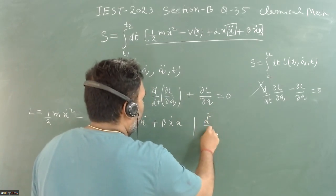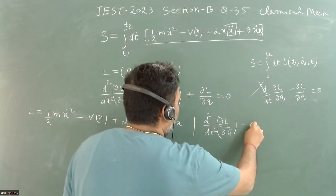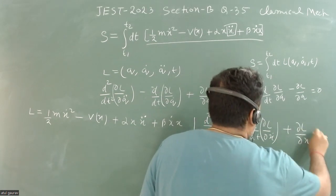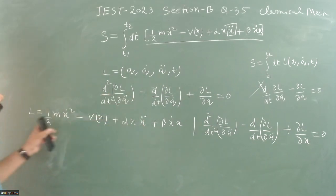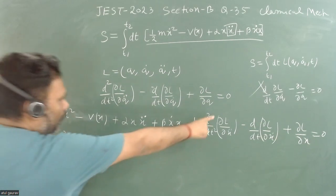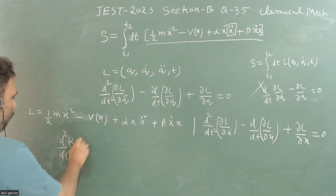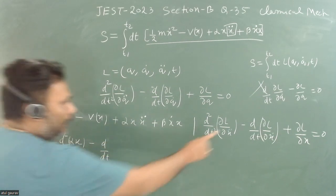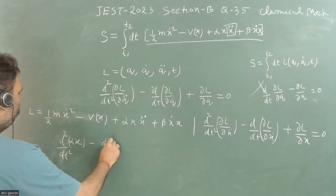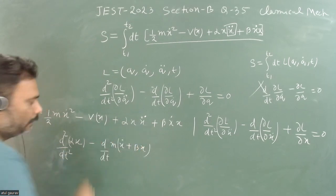The equation of motion will be d²/dt² of (∂L/∂x-double-dot), minus d/dt of (∂L/∂x-dot), plus ∂L/∂x equals zero. Now, ∂L/∂x-double-dot gives alpha x, since x is the dynamical variable. And ∂L/∂x-dot gives m x-dot plus beta x.